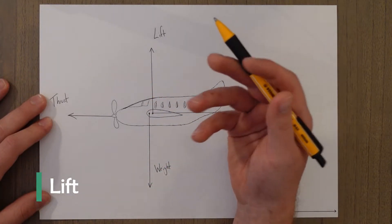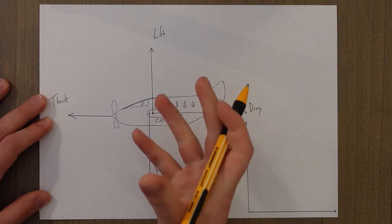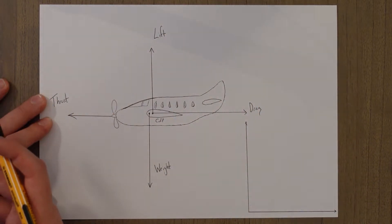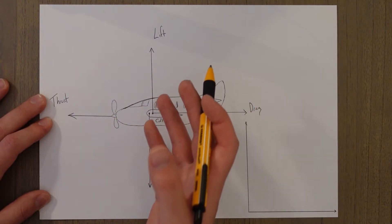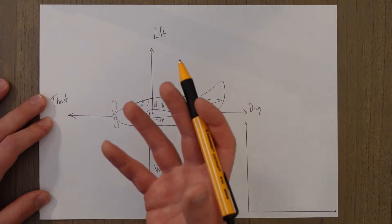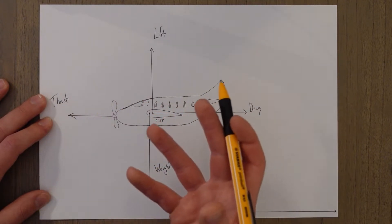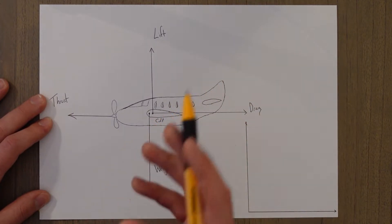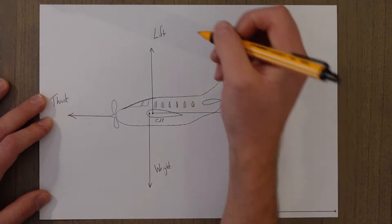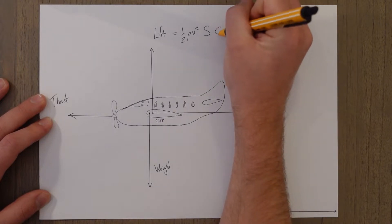So lift is generated from the pressure differential caused by the dynamic pressure, and it acts through something called the centre of pressure, the C of P. This gives us a value for lift per unit area if we use the dynamic pressure, so we need to multiply it by the area of the wing to find out how much lift this actual wing will produce. There's also a third factor involved which is called the coefficient of lift — basically a measure of how good the wing is at making lift under certain conditions. The value of this coefficient will change according to the angle of the wing, the shape of the wing, whether we have flaps out or not. Watch my video on lift in the Principles of Flight series for more in-depth detail. Lift equals a half rho v squared — dynamic pressure — times the surface area, times the coefficient of lift.